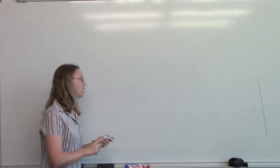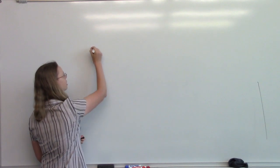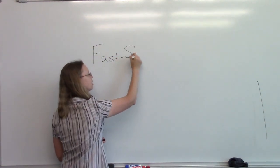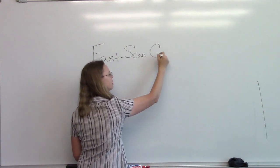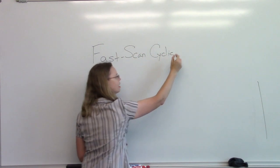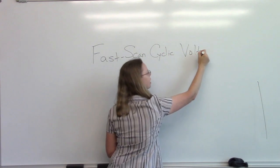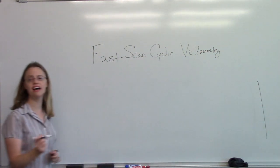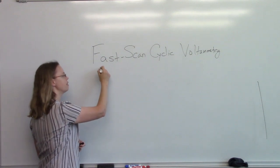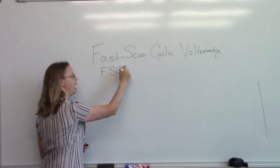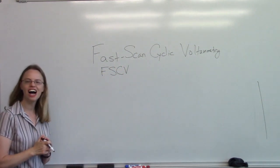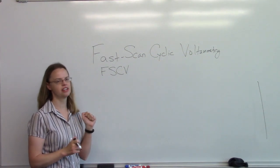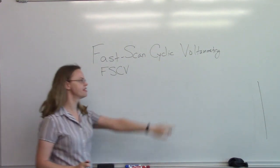Today I'm going to be talking about the technique that we love here in the Mitten lab, which is called fast scan cyclic voltammetry. Because nobody really wants to write that out — that took me way too long — we always just refer to it in the lab as FSCV. Let's go through what it means. I'm not going to start at the beginning though; I'm going to start at the end.